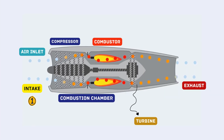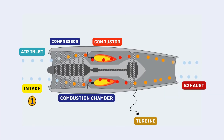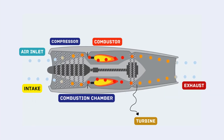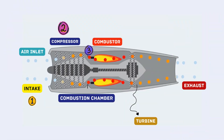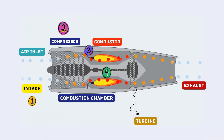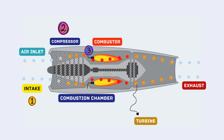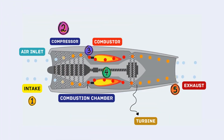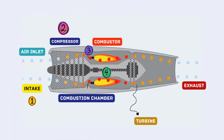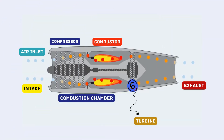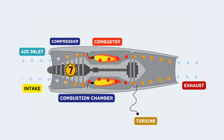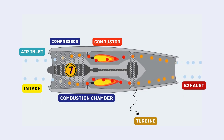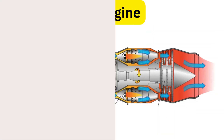At its core, a jet engine works by drawing in air, compressing it, mixing it with fuel, igniting the mixture, and expelling the high-speed exhaust gases. These hot gases spin turbines, which in turn power the engine's compressors and other components.